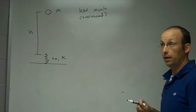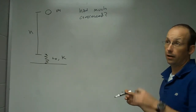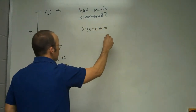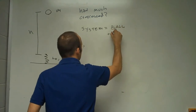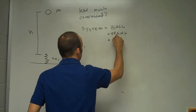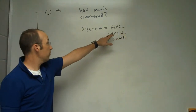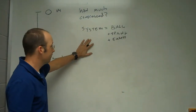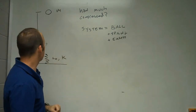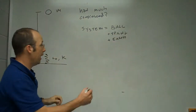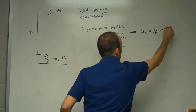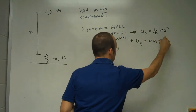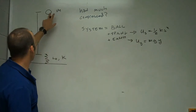So if we use the work-energy principle, the next thing we need to do is say, what's my system? In this case, I'm going to say the system is the ball plus the spring plus the earth. If I include the spring in the system, then I can have spring potential energy. If I include the ball and the earth in the system, then I can have gravitational potential energy. That makes it easier so I don't have to worry about the work done by gravity or the work done by the spring.